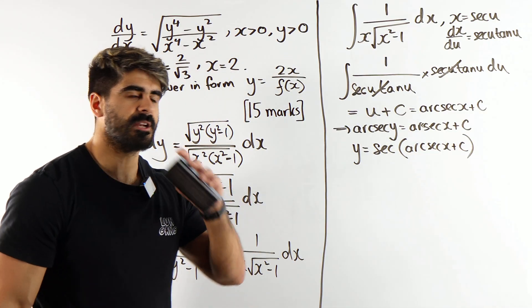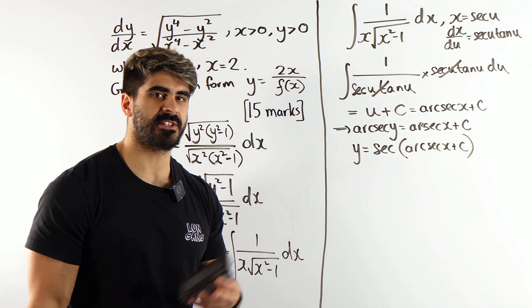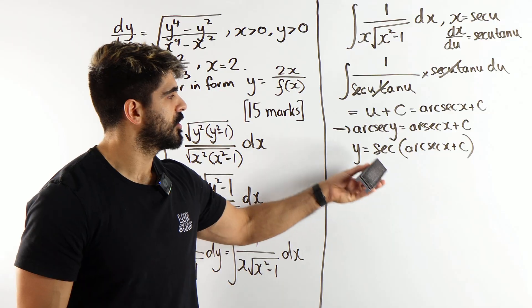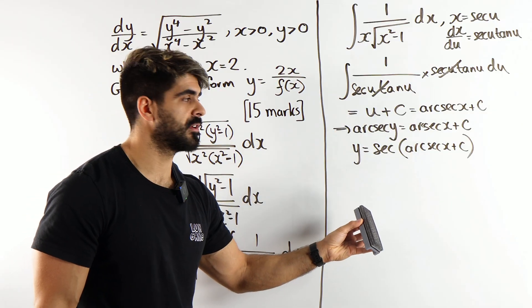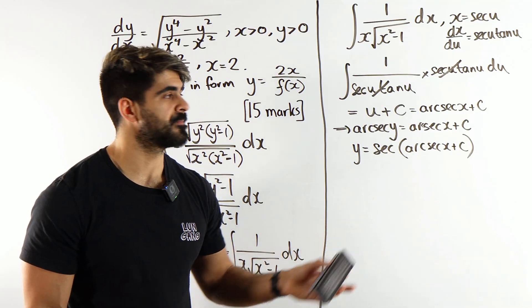Well, that'll be this side as well. We'd have arc sec y equals arc sec x plus c. Well, we're rearranging for y, so you're going to do sec on both sides, right? So, we're going to have y is sec of arc sec x plus c. Now, what should you be thinking about here? You should be thinking about the addition rules. But the addition rule for sec, it doesn't exist.